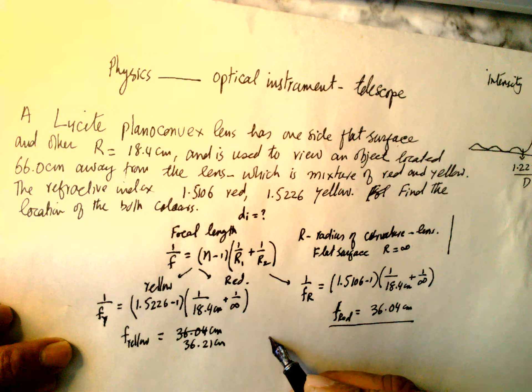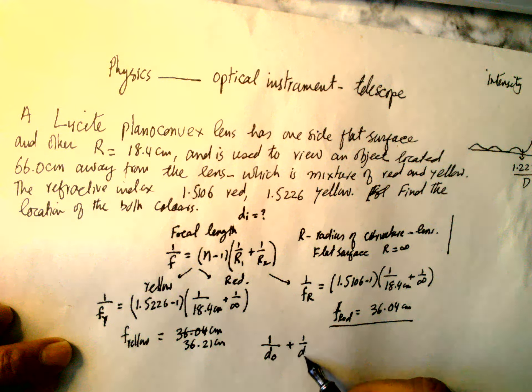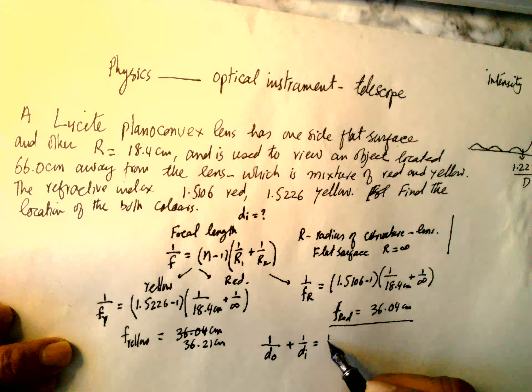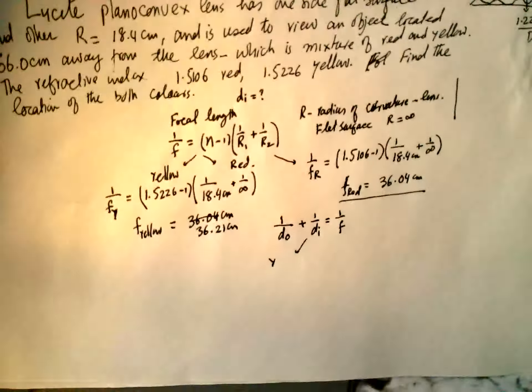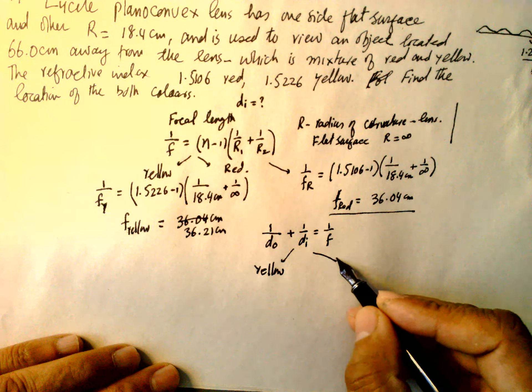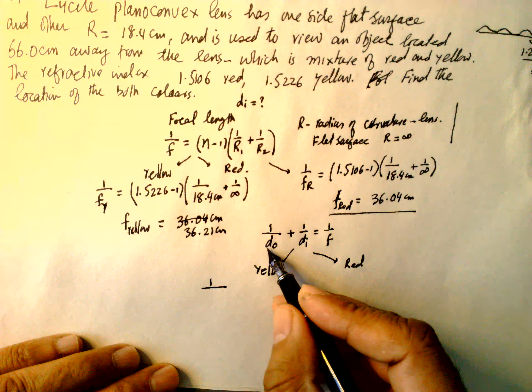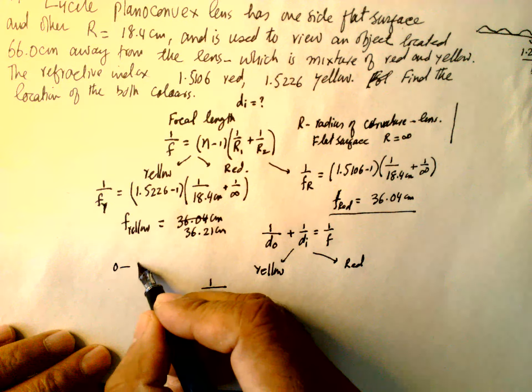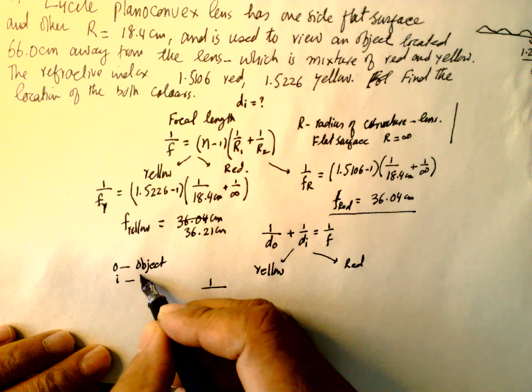1/d_object + 1/d_image = 1/focal length. Distance, distance, distance, and F is focal length. So for yellow and for the red color, O is for object distance, I for the image distance, and F is focal length.